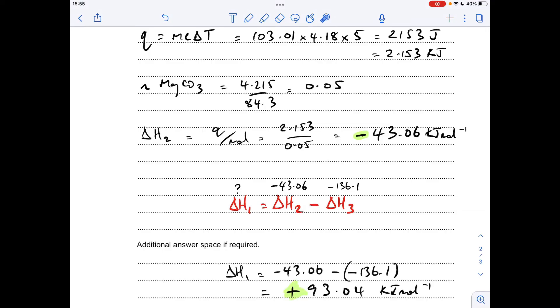So delta H1 comes out a plus. It's got to have a sign with a delta H value, so obviously your calculator wouldn't have had that plus sign on, but you have to include it. So it's plus 93.04 kilojoules per mole.